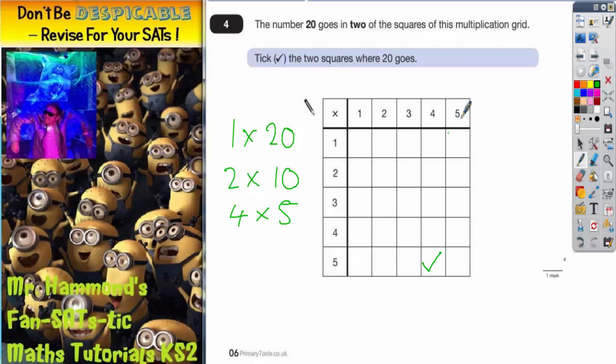We can also switch it around and have 5 times 4. So 5 times 4 will also be that box, and they are the two squares where 20 goes. Nothing else, so that's the question done.